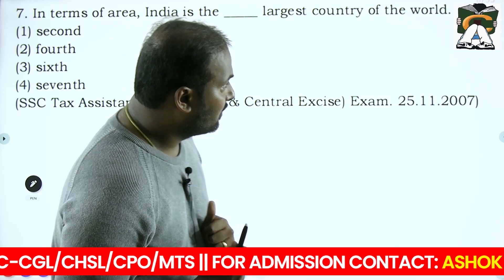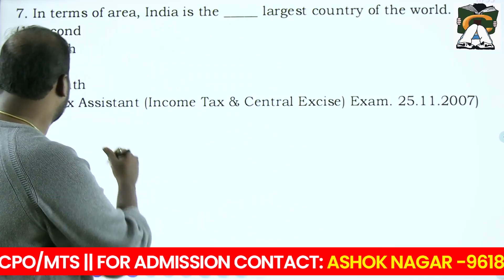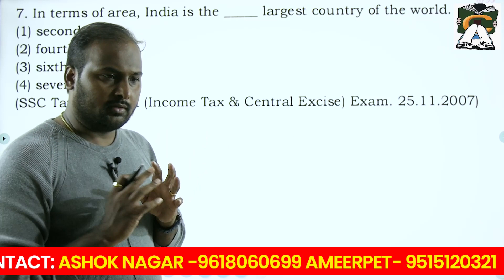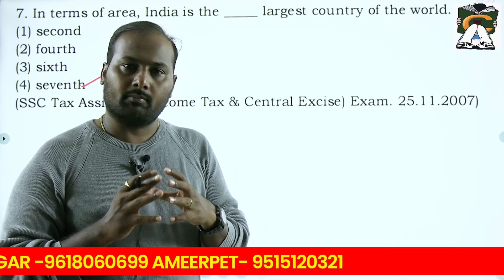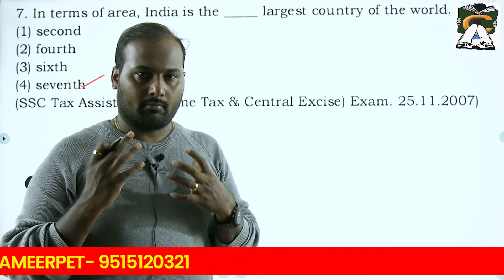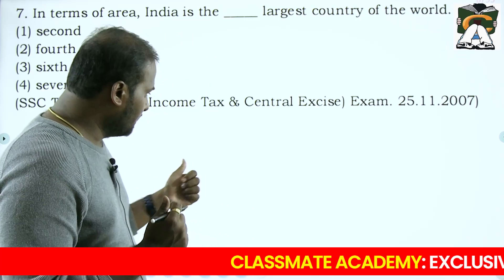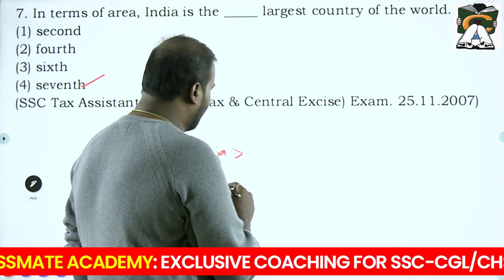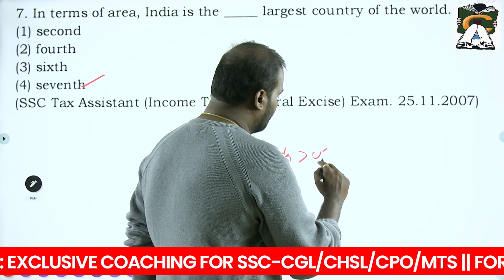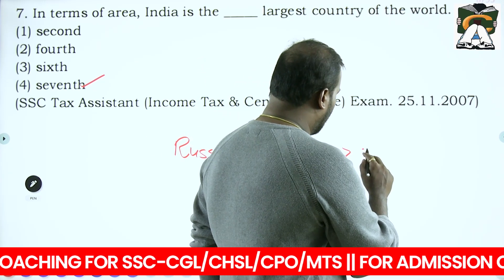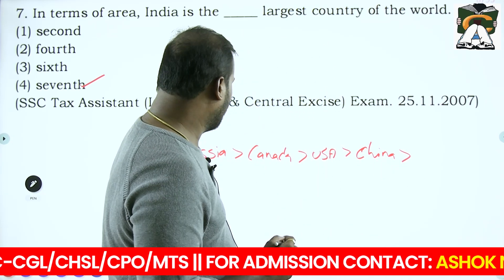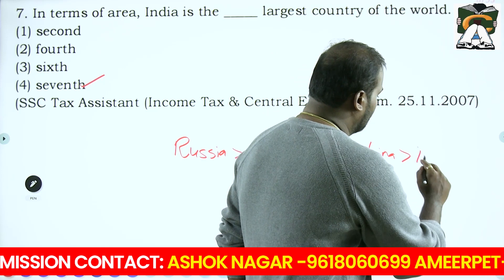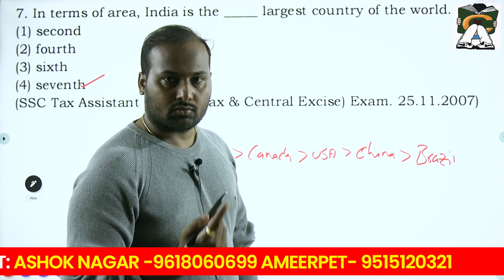'In terms of area, India is the dash largest country in the world.' Your answer is seventh largest. To remember, use the old world map in anticlockwise spiral order: Russia, Canada, USA, China, Brazil, Australia, India. Russia is the largest, then moving anticlockwise you reach Canada, then USA, then China, then Brazil, then Australia, then India - seventh largest.